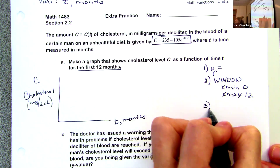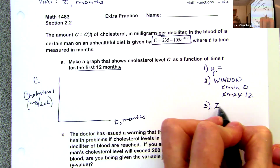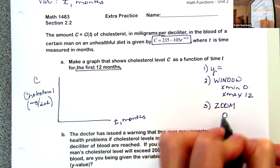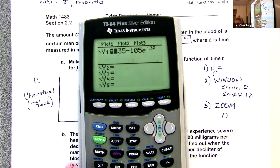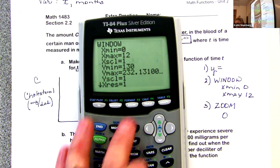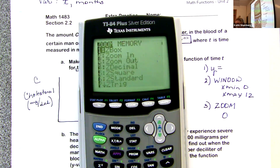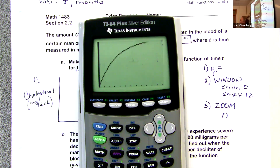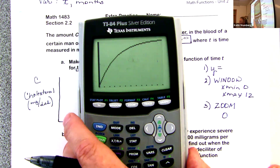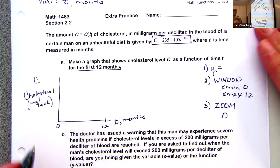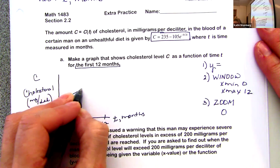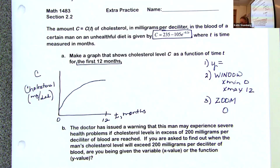Once you get that in, what do you hit? Zoom — zoom button — and then zero. Second goes with the table; since we're doing graphs, I'll go zoom zero. I've already got zero and 12 in. You should get something that looks like this. If not, I can help you figure out your error after class. So if I sketch this, zero to 12, it looks something like this. That's part A.